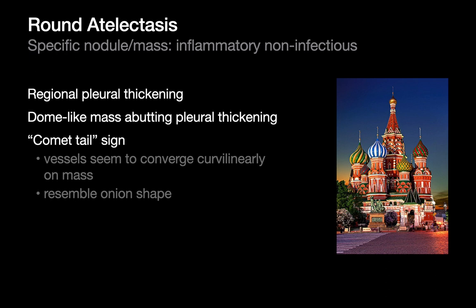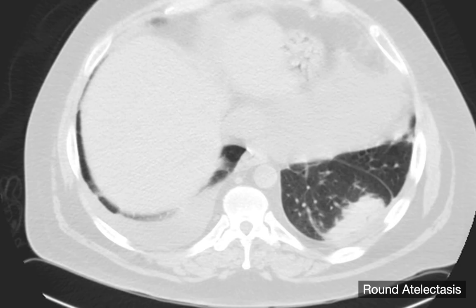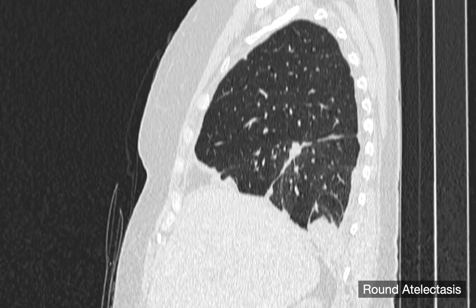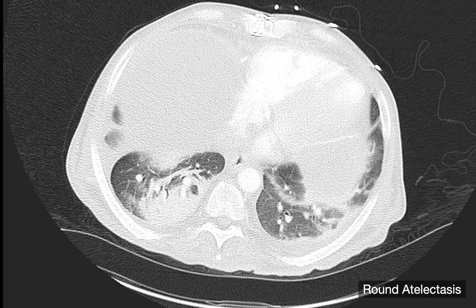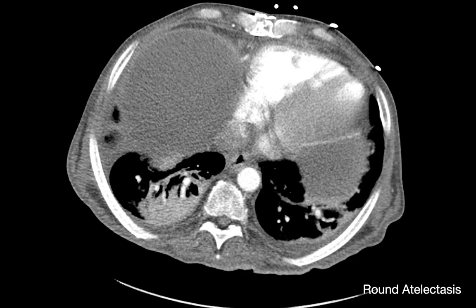Imaging features we should see with round atelectasis are a homogeneous mass with a dome-like appearance touching the edge of the lung where the pleura is, where the blood vessels look like they're reconverging as you move from central to periphery. Oftentimes when round atelectasis occurs, it can present in a way that's pretty specific. There are certainly many cases where you may be on the fence, and those ones will have to be worked up as a nonspecific mass, involving follow-up and rarely other tests like a PET CT or occasionally a biopsy.